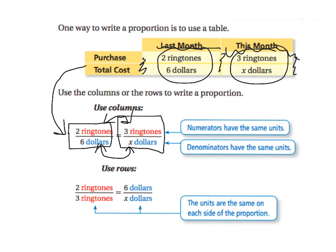Another way to do this is to use the rows. So if you do that, you take the ringtones and you're comparing the ringtones. So if you have two ringtones, you pay $6. So ringtones, $6. And if you have three ringtones, you pay $x.